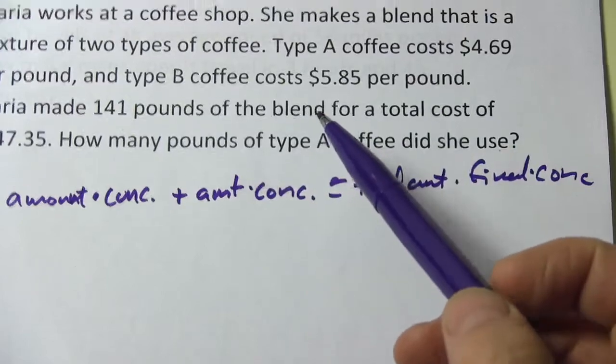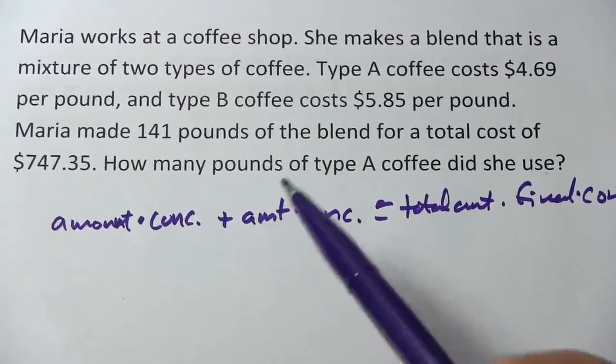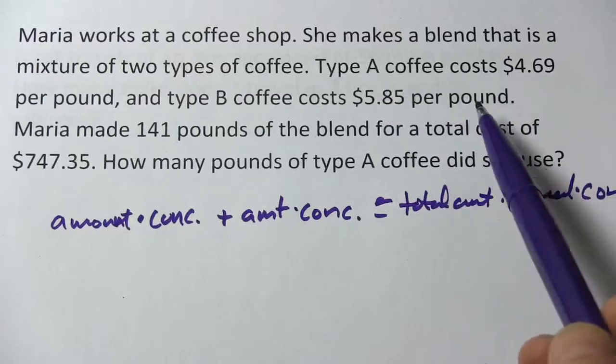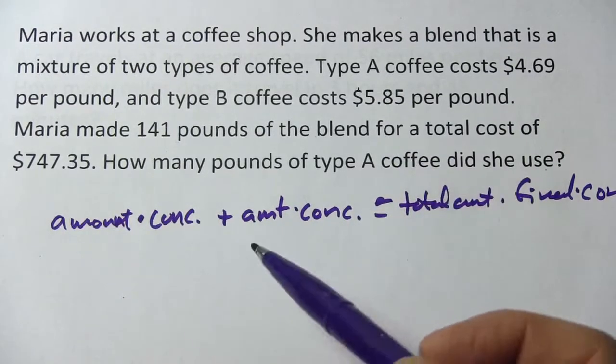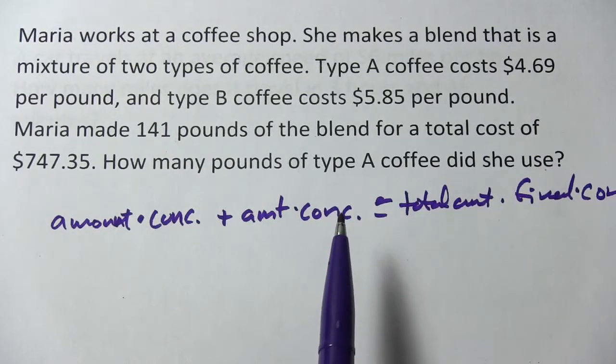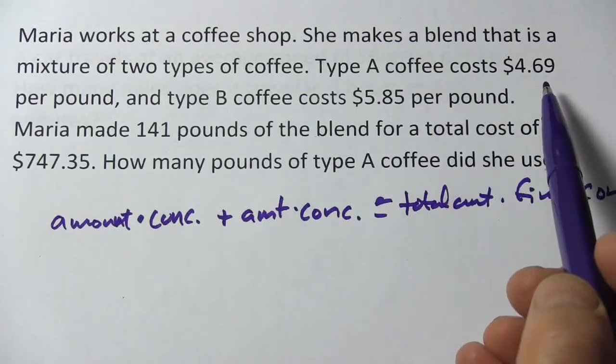We've got something slightly different in this one. We don't have a concentration of a solution. We have types of coffee and we have prices instead of concentrations. So we're going to use this general formula, but we're going to substitute in the price for the coffee.